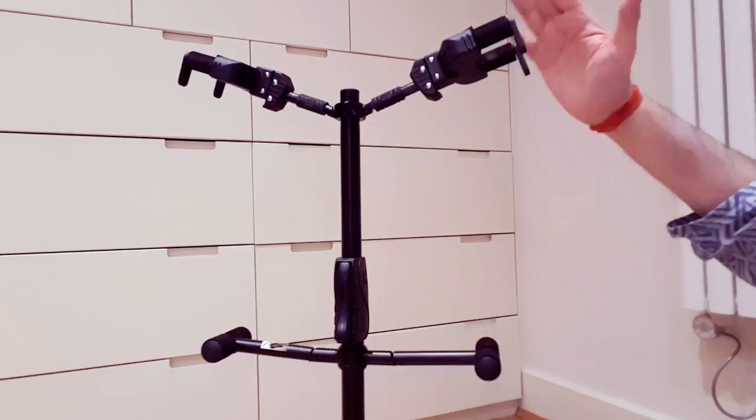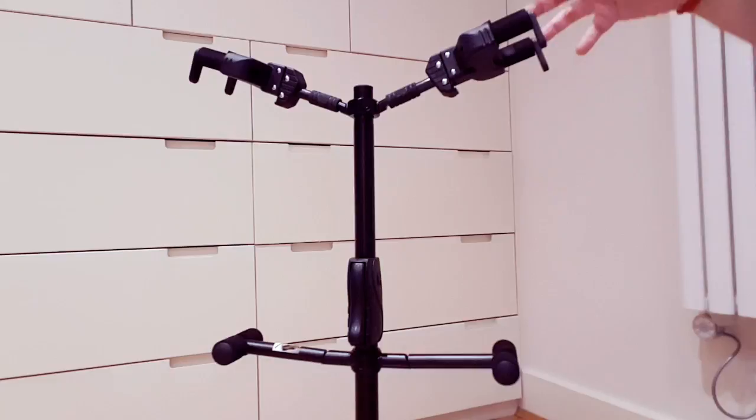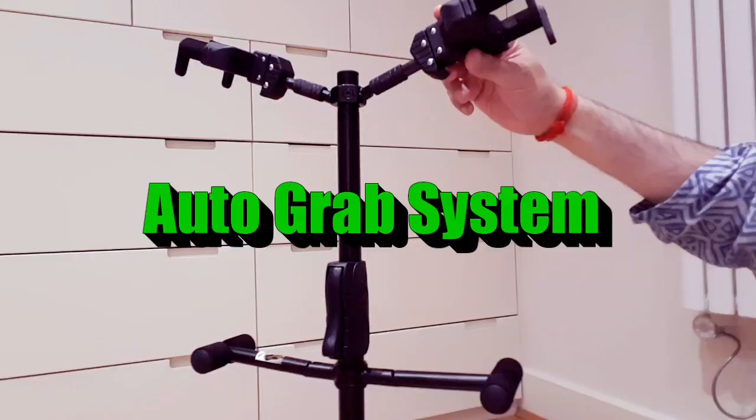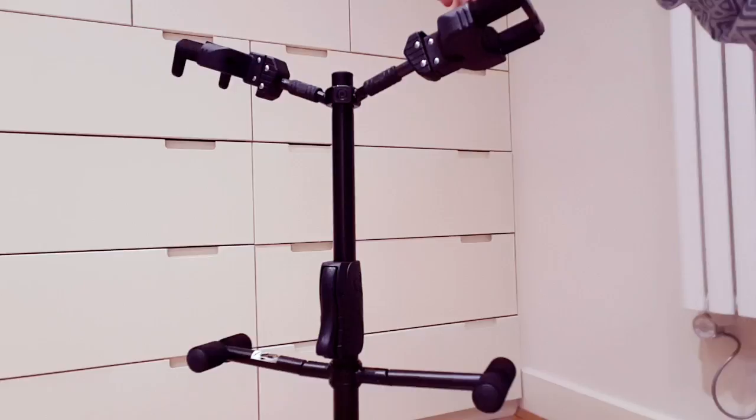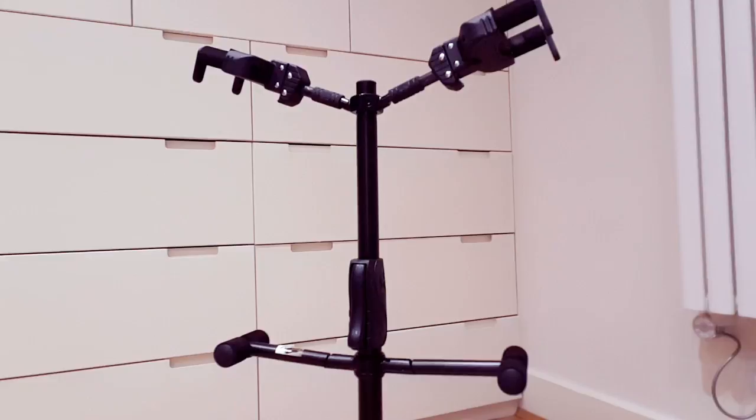Now, the way it actually holds the guitar is via the weight of the guitar. You can see on the end you've got these little arms, and the weight of the guitar actually locks those arms into place. That's very clever. If I just bring that in a little bit closer, so you push it down and then you can see that they close like that. So it's the weight of the instrument that actually holds it in place. Very clever, very neat, and very practical as well.